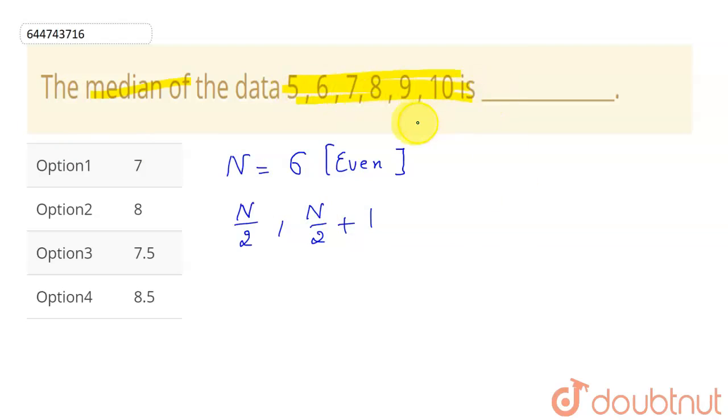So I don't have to rearrange them. Then I have to select n by 2 and n by 2 plus 1 term. So n is 6 here, so my n by 2 will be 6 by 2 which will be third term